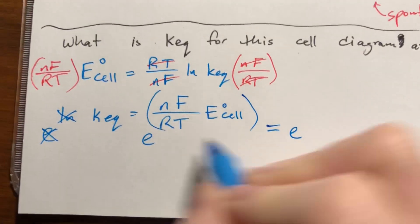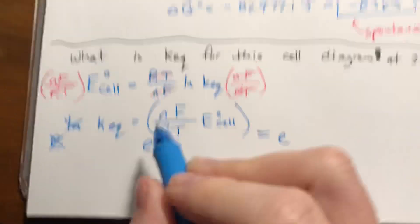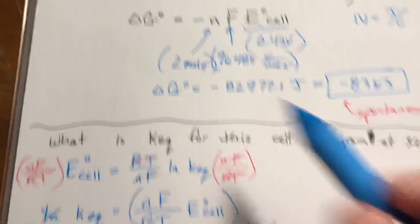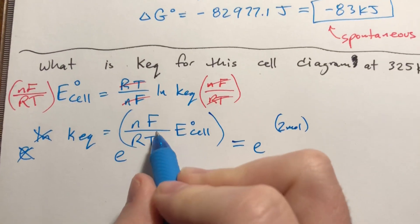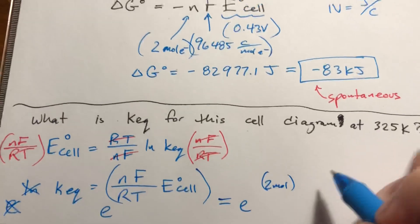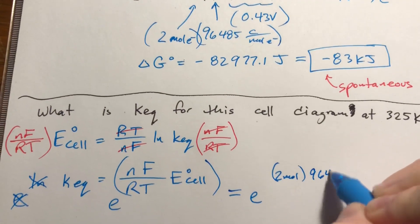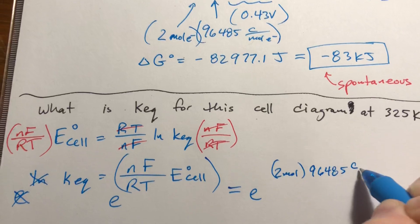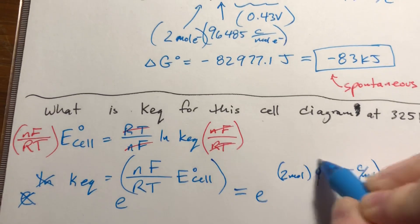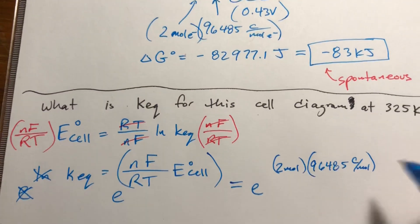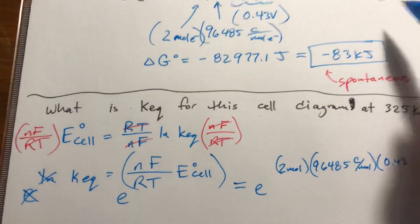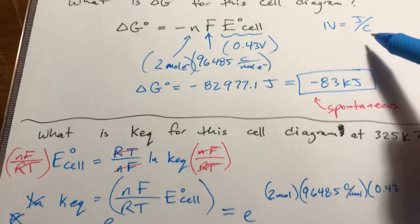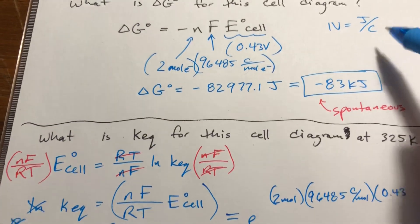So plug everything in, because we know it all at this point. N was the same as it was up here, which is 2. Faraday's constant is a huge number, which is 96,485 coulombs per mole. E sub cell is 0.43 volts, but I'm going to write it as joules per coulomb so we can watch the units cancel out, because 1 volt is a joule per coulomb.